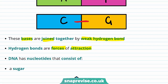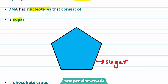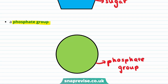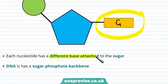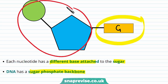So DNA is a polymer as it's made up of lots of different nucleotides. But what are nucleotides? Well, nucleotides consist of a sugar, which is represented by this pentagon here. A nucleotide is also made up of a phosphate group, shown by this circle here. It also has one of the four different bases — so either A, C, T, or G — attached to the sugar. Each nucleotide has a different base attached to the sugar. DNA also has a sugar-phosphate backbone, shown here, and that helps provide structure to DNA.